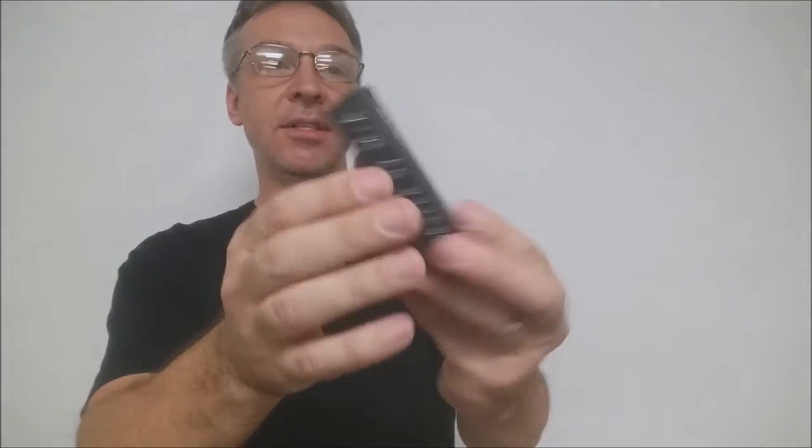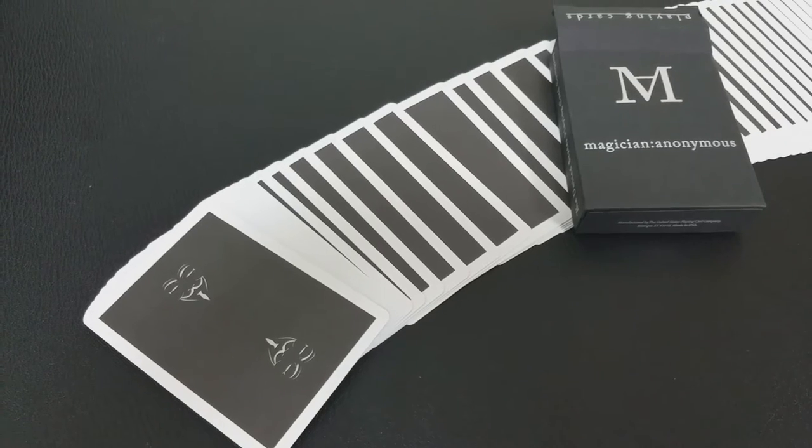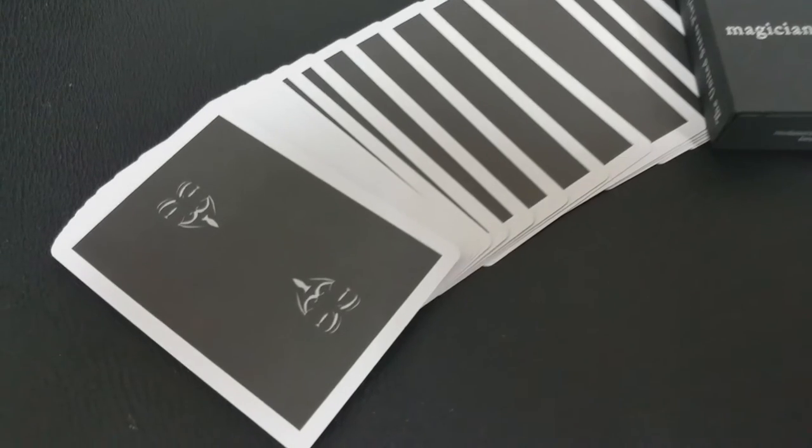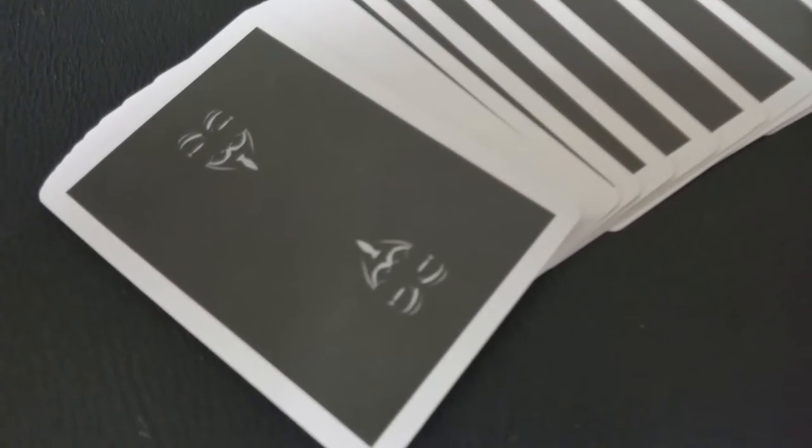At the top it says playing cards and at the back it has the Guy Fawkes mask. Now, you might remember Guy Fawkes from V for Vendetta. If you saw that movie, he was a member of a group of provincial English Catholics who planned the failed gunpowder plot of 1605.